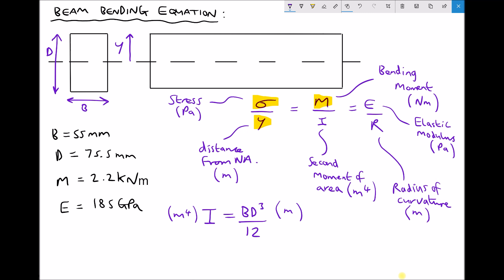We said that E was the elastic modulus of the material, and that's just a property of the material which determines its elastic behaviour. And finally we have radius of curvature.